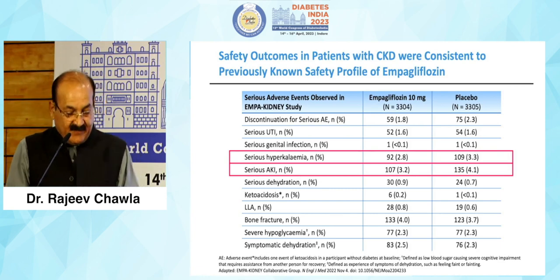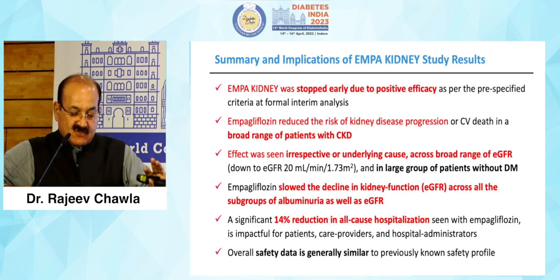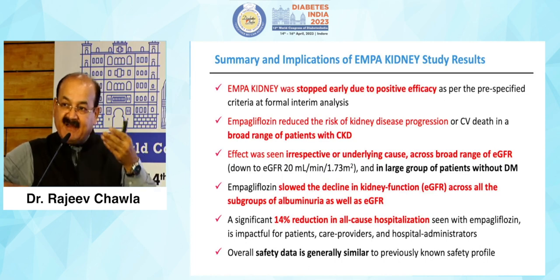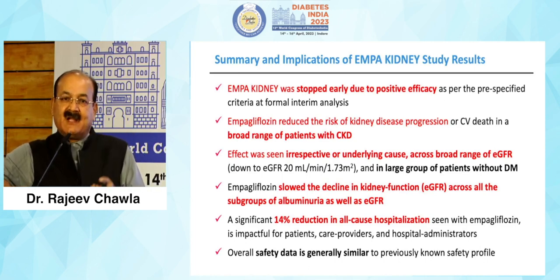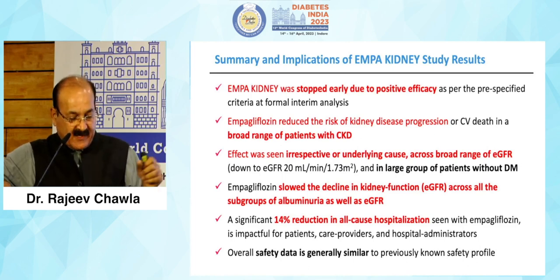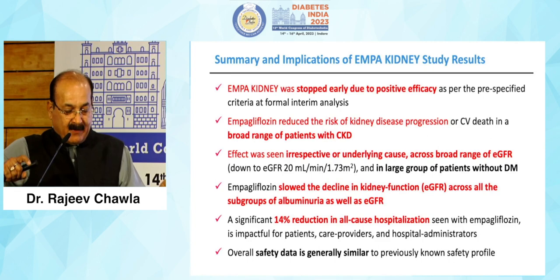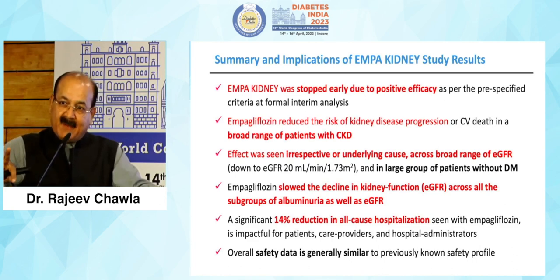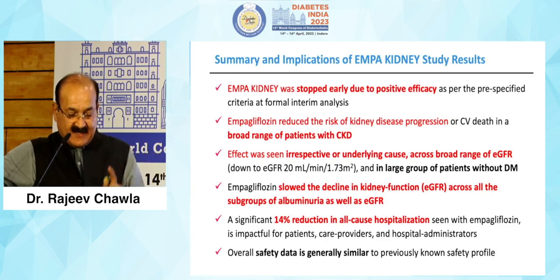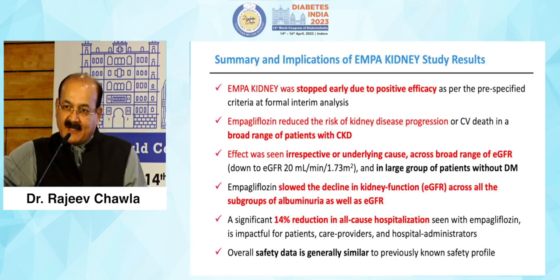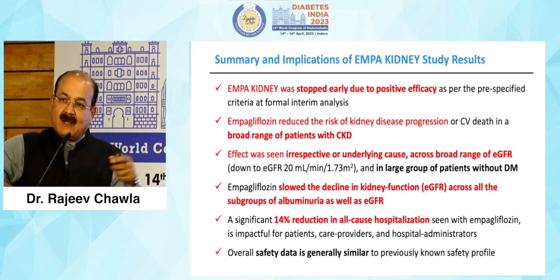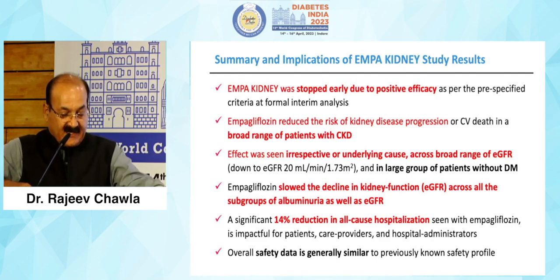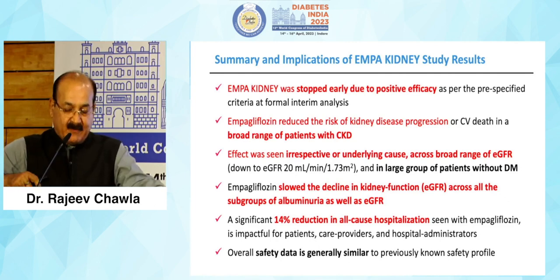EMPA-Kidney also reduced all-cause hospitalization by 14 percent with a very significant p-value. In terms of safety, there is always a concern with SGLT2 inhibitors about episodes of hyperkalemia or acute kidney injury. Versus placebo, patients on empagliflozin 10 milligram actually behaved much better in terms of these side effects also. The trial was stopped prematurely because events happened and results were so overwhelming that the placebo group should not be denied the benefit of empagliflozin.